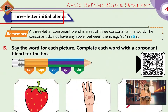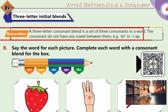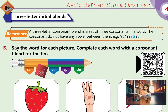Now let's go to three-letter initial blends. Initial blends means that when three consonants come together, and if there is no vowel among them, they combine to give us a sound. Every letter contributes to the sound.